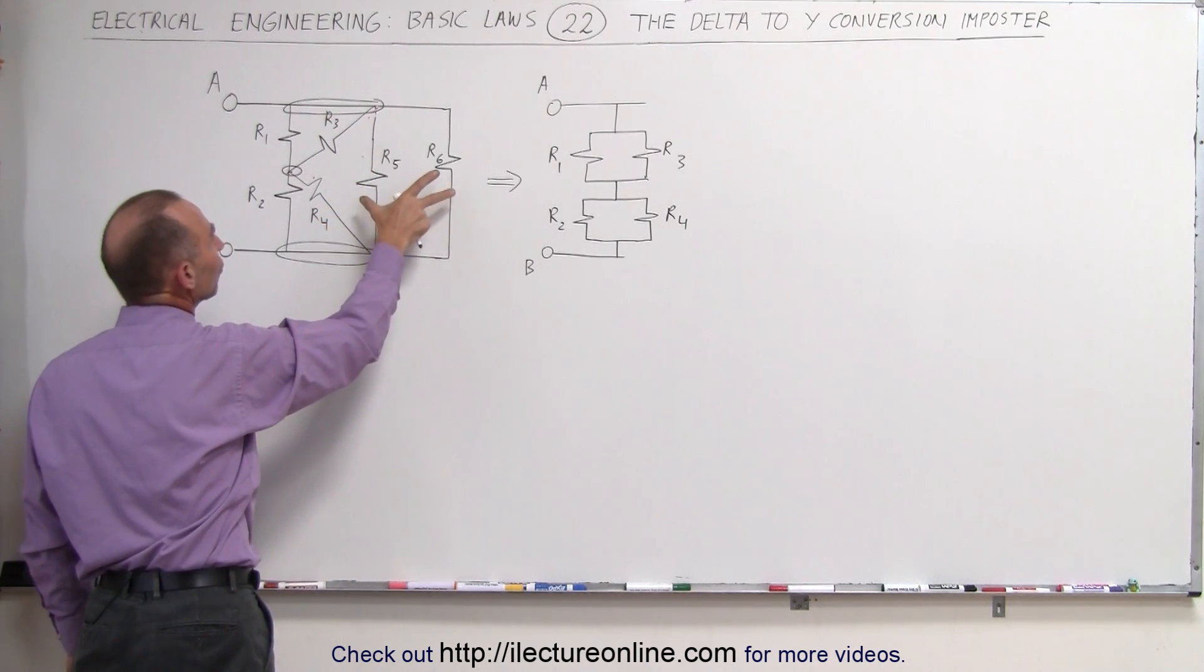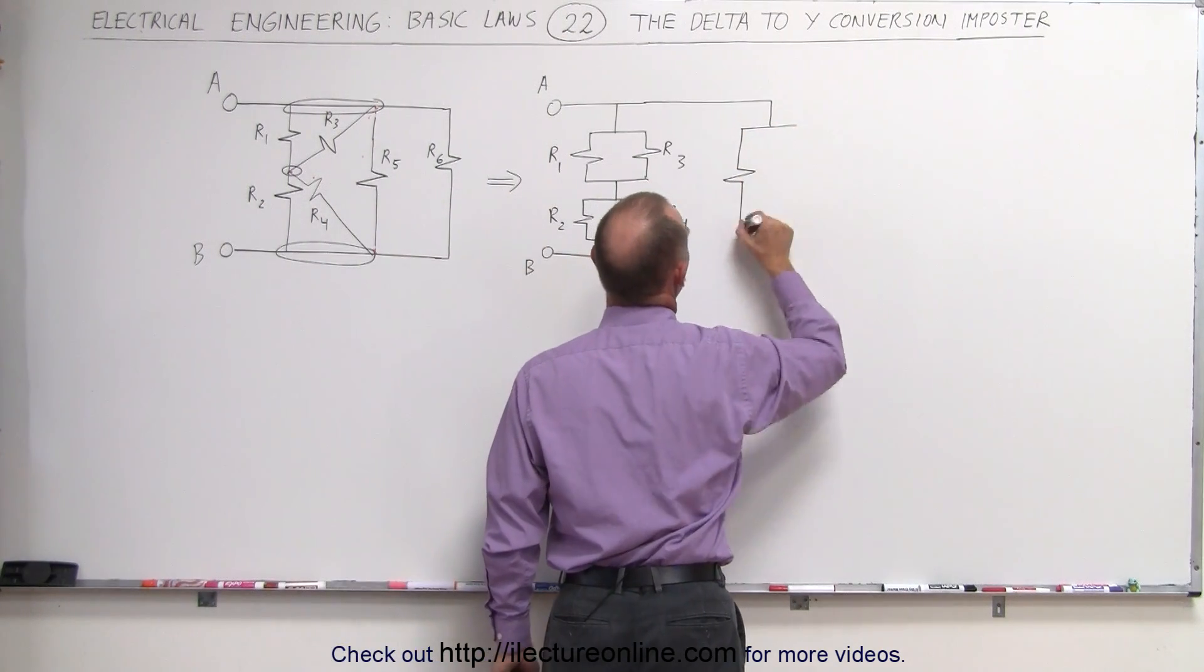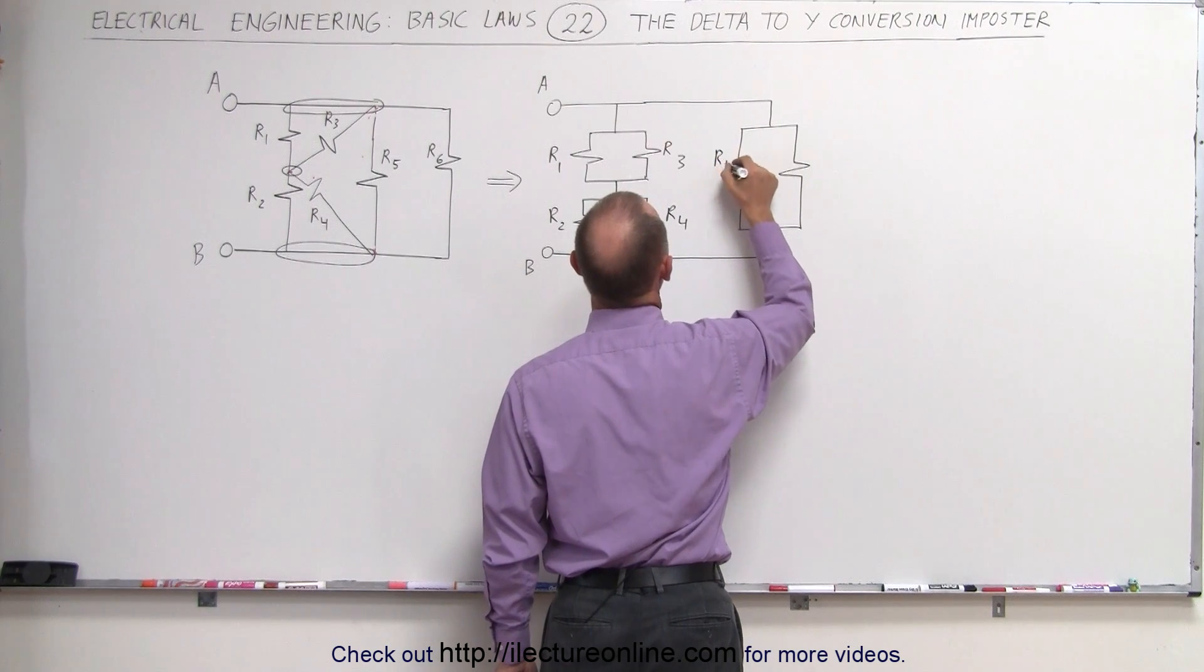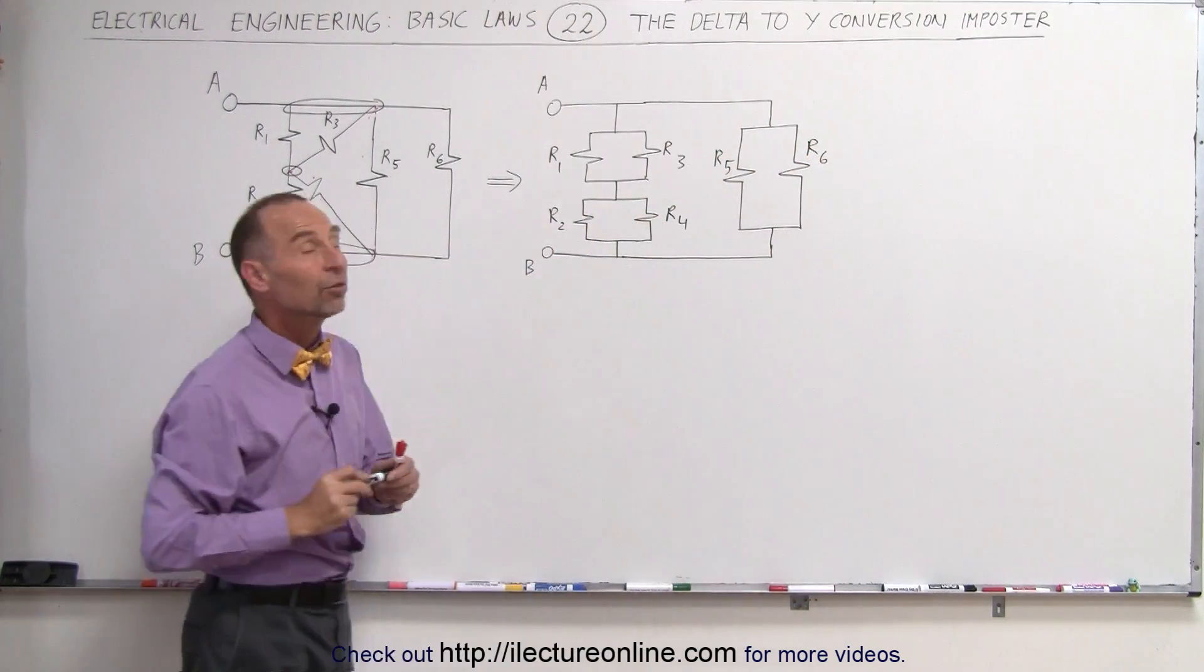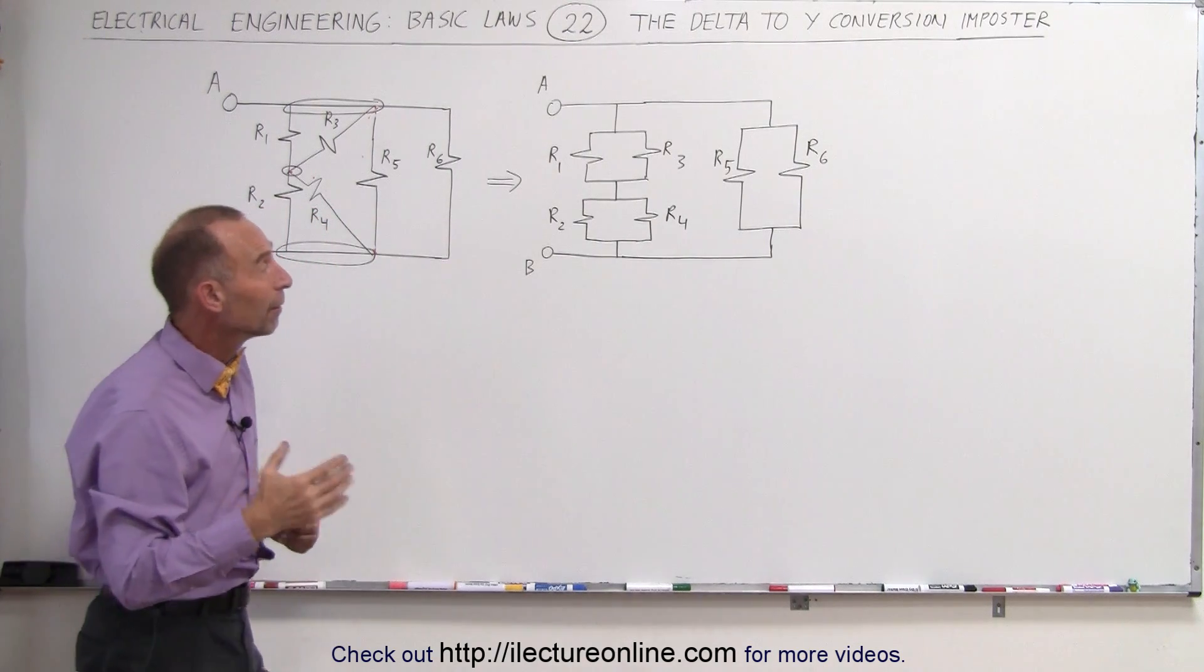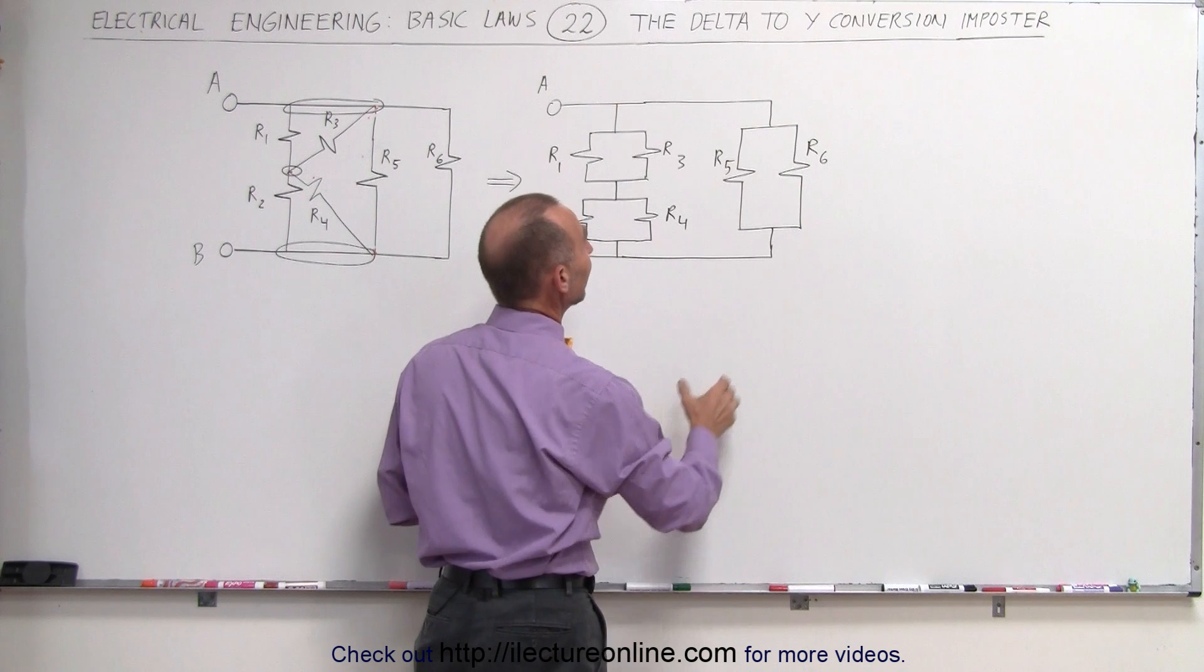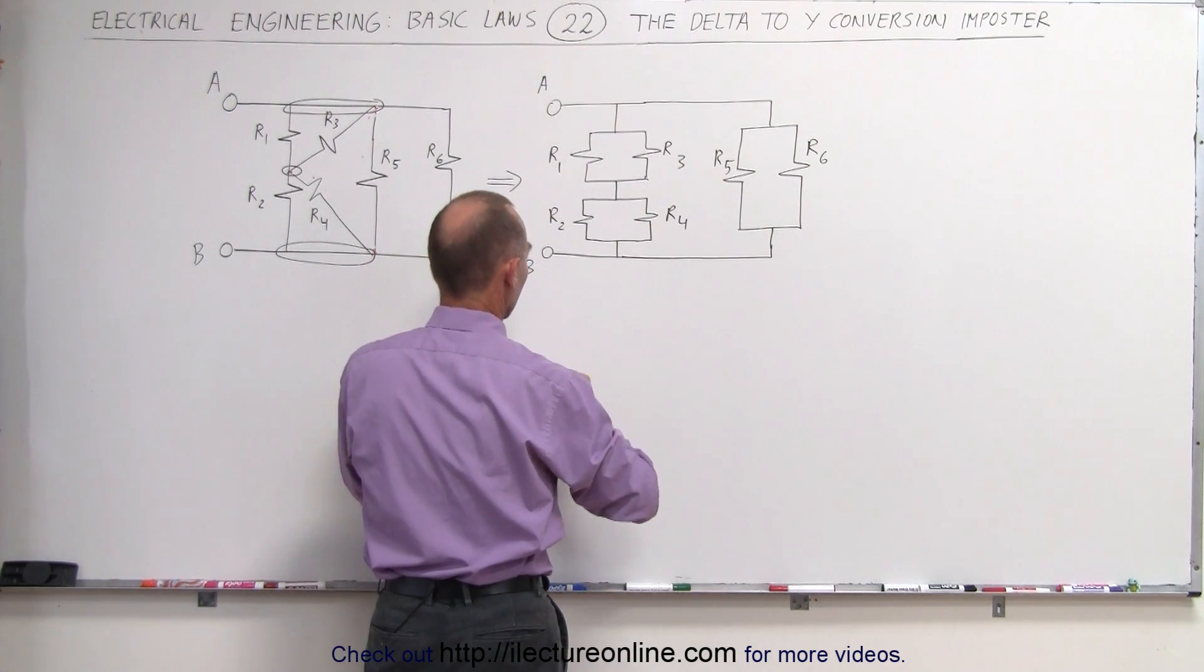In addition to that, we can also draw these in parallel off on the side. This would be resistor R5, and this would be resistor R6. And notice those can be, we can find the equivalent resistance of those two as well. That means we can then make the equivalent circuit as follows.